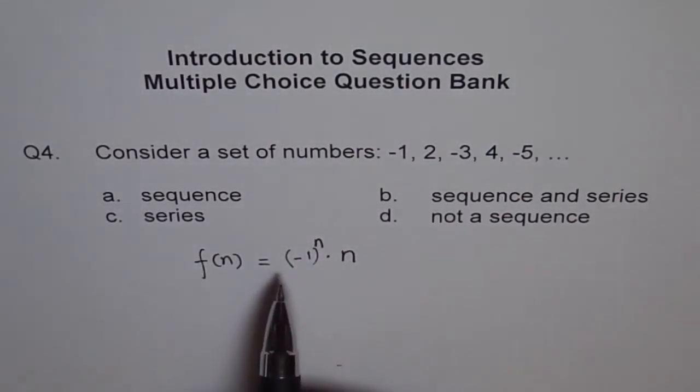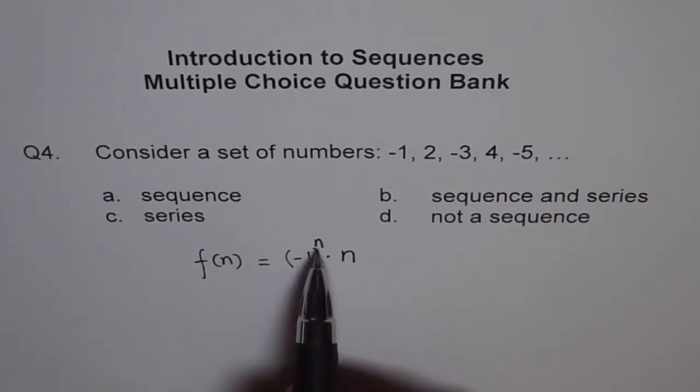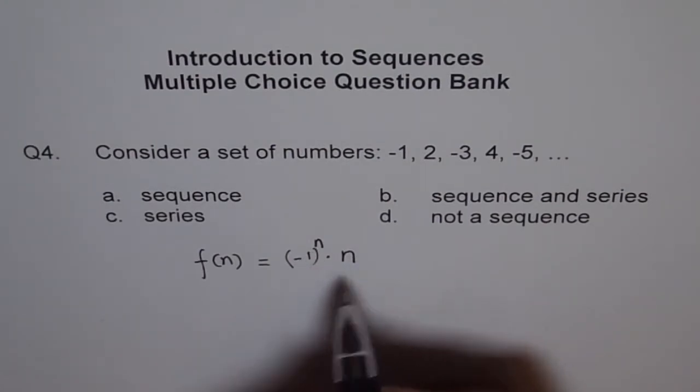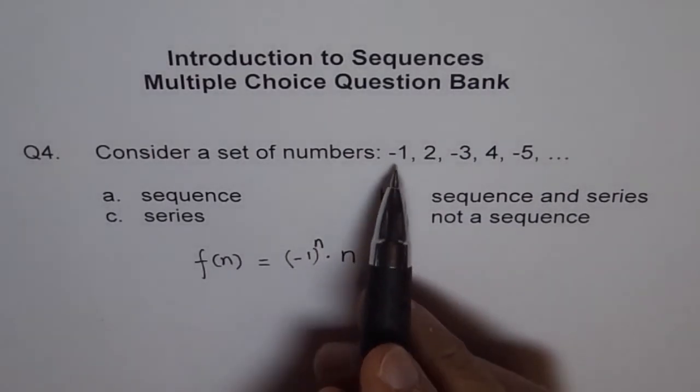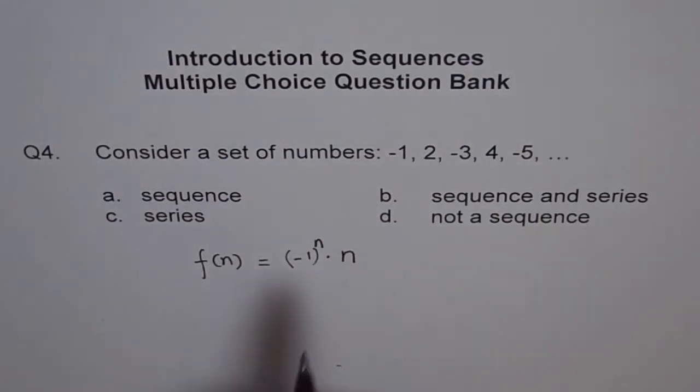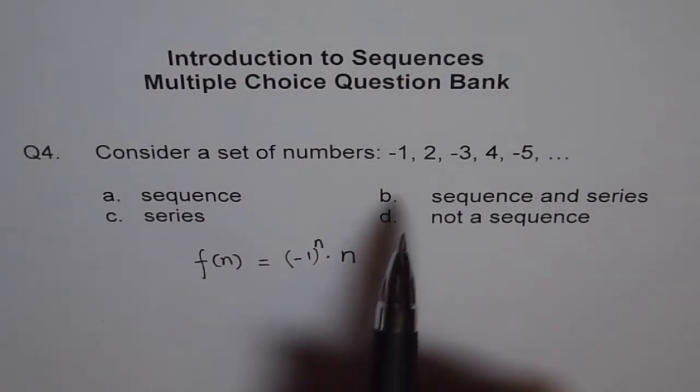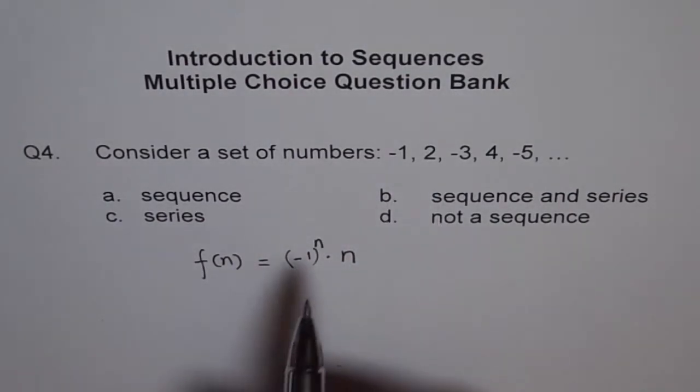So what happens is, if n is 1, for example, let's find out: if n is 1, then (-1)^1 will be -1, and I will get the first term -1. If n is 2, then (-1)^2 will become positive and n becomes 2, so I get +2. If n is 3, then odd degree will give (-1)^3 as negative, and I get -3.